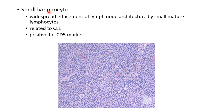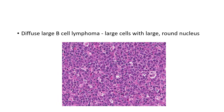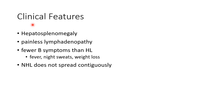In small lymphocytic lymphoma, the lymph node will show widespread effacement of lymph node architecture by small mature lymphocytes. Small lymphocytic lymphoma is related to chronic lymphoblastic leukemia and is positive for CD5 marker. This picture shows the small mature lymphocytes seen in small lymphocytic lymphoma. In diffuse large B-cell lymphoma, there will be large cells with large round nucleus.